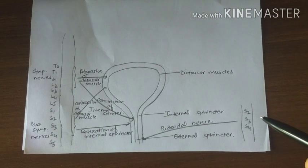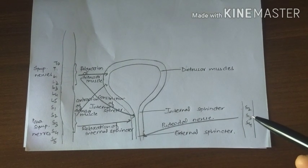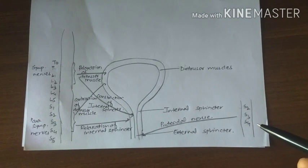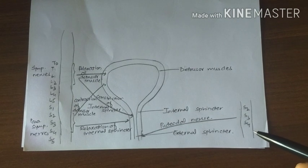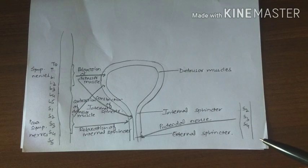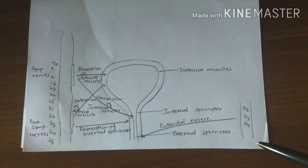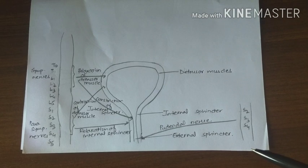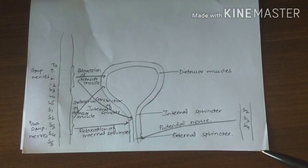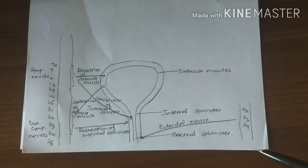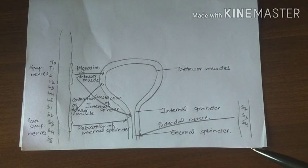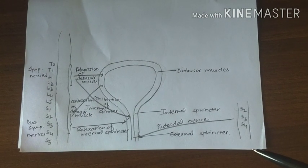For sensation of bladder distension, afferent fibers from the pelvic splanchnic nerve pass via the hypogastric plexus to spinal cord segments T11 to L2, and within the spinal cord this sensation passes through the fasciculus gracilis. For sensation of bladder pain, which appears when there is spasm of the bladder wall, presence of stones, or inflammation, afferent fibers pass via the hypogastric plexus through the lateral spinothalamic tract.